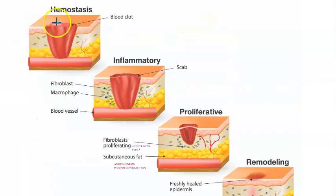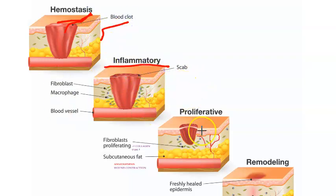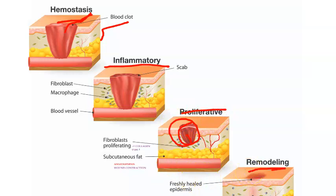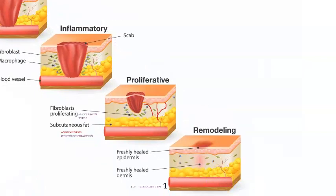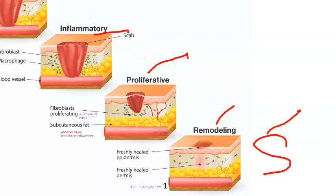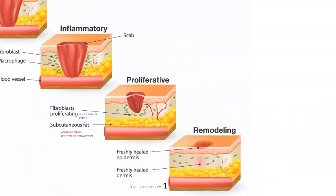First you got injured. There is bleeding, then there is blood clot. Then you have the inflammatory phase, and then you have the proliferative phase where there is wound contraction. Then you have the remodeling, and then there can be a scar. So: inflammatory, proliferative, remodeling, and phase of scar formation according to the textbook. This inflammatory phase is also called the lag phase.